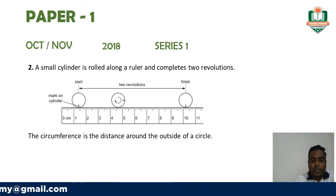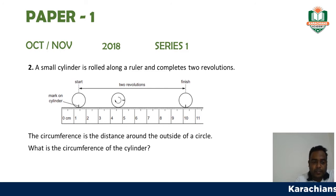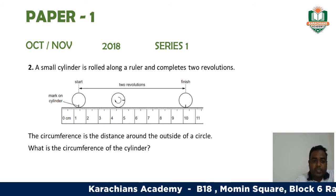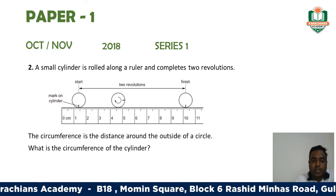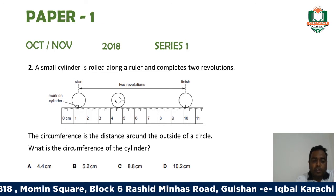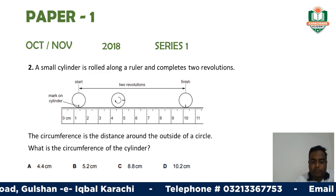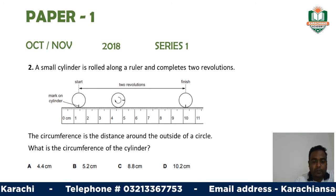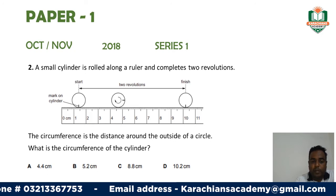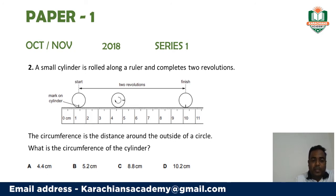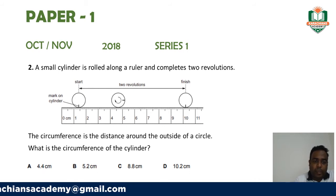We know that circumference can be measured by using the external diameter of a cylinder. They are asking: what is the circumference of the cylinder? The options given are: option A — 4.4 cm, option B — 5.2 cm, option C — 8.8 cm, and option D — 10.2 cm. Before solving, we must identify where the revolution starts.